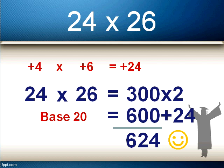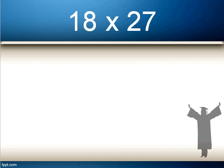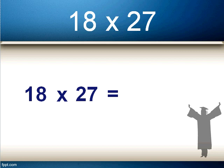Now let's look at another example — this one is slightly different. This time it's 18 times 27. They're both reasonably close to 20, so we'll use 20 as our base number again. 18 is 2 less than 20, so it's minus 2; and 27 is 7 more than 20, so plus 7.